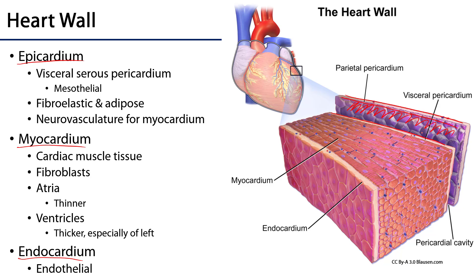Deep to the epicardium is the neurovasculature that supports the heart, particularly the myocardium — the coronary arteries and their branches, the cardiac veins and their tributaries, etc. These can most often be found within the sulci that are part of the superficial features of the heart.